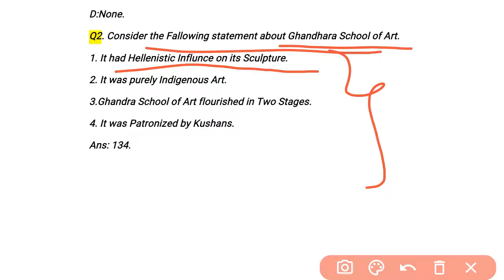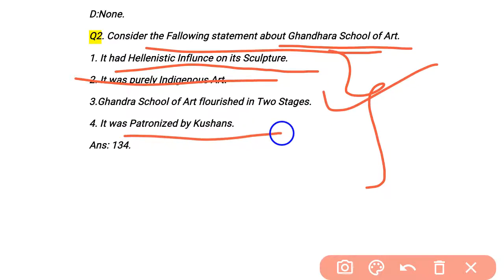Greek and Roman influence is seen in the Gandhara School of Art. Number 2: it was purely indigenous art. Gandhara School of Art flourished in two stages. It was patronized by the Kushanas — the Kushanas supported and patronized the Gandhara School of Art during the 2nd century. So the correct answers for this MCQ are options 1, 3 and 4. This is how such MCQ questions are asked on Schools of Art.